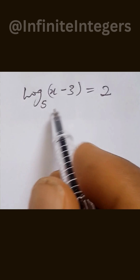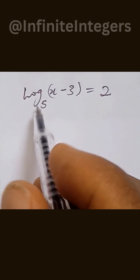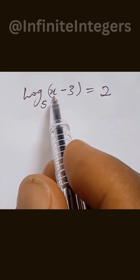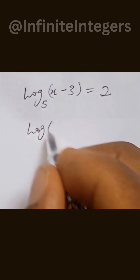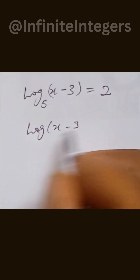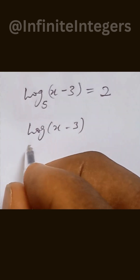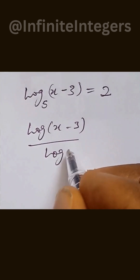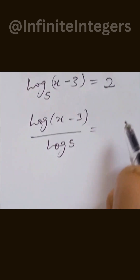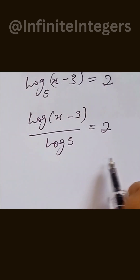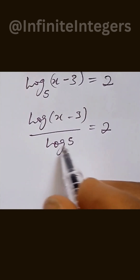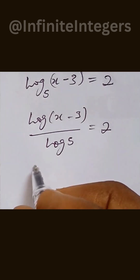Let's solve this logarithmic expression: log base 5 of (x minus 3) equals 2. The first thing we have is log of (x minus 3) over log 5, using the change of base formula, and that equals 2.